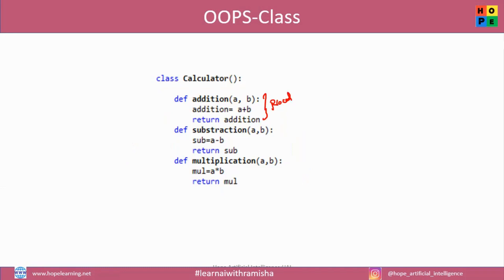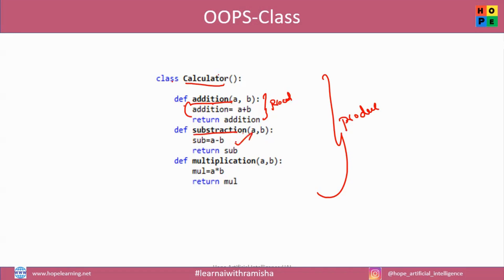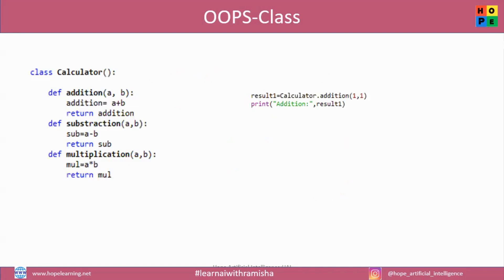We call the subtraction — call subtraction by name, call multiplication by name. So when you call it, it will execute. That is our class procedure. Now, to use a function inside this class, that is the procedure — how to call it: calculator.addition to execute that function, calculator.subtraction to execute that function.